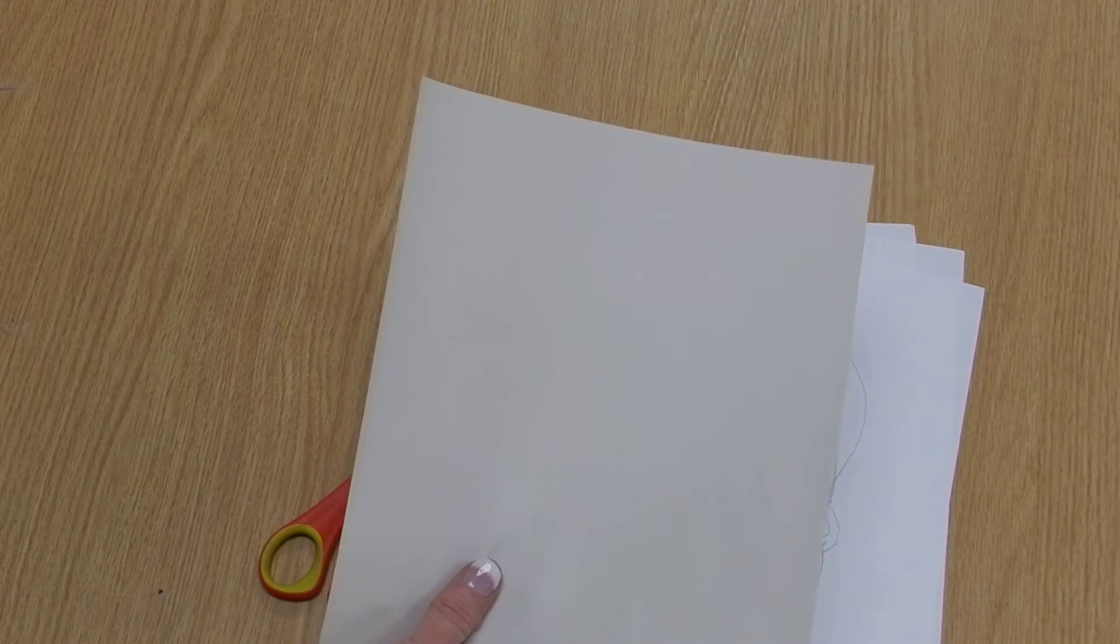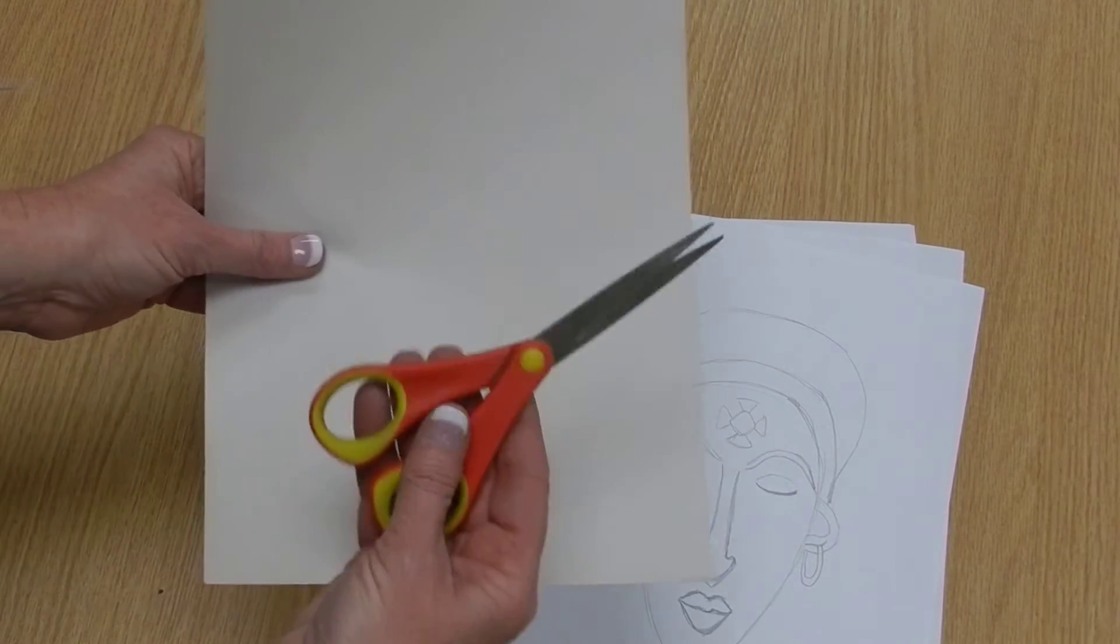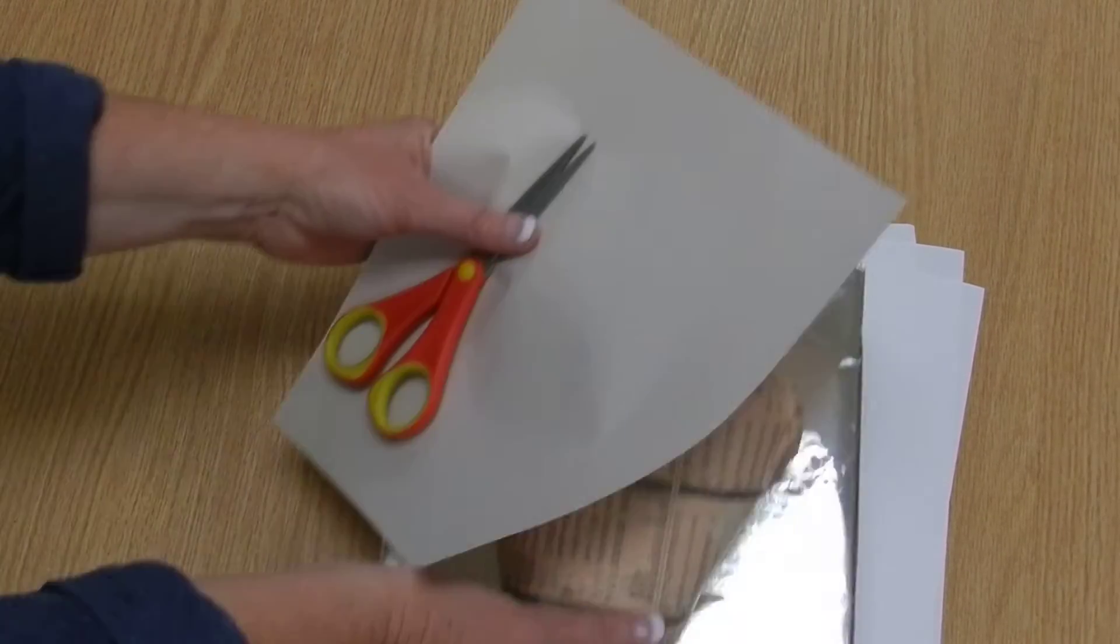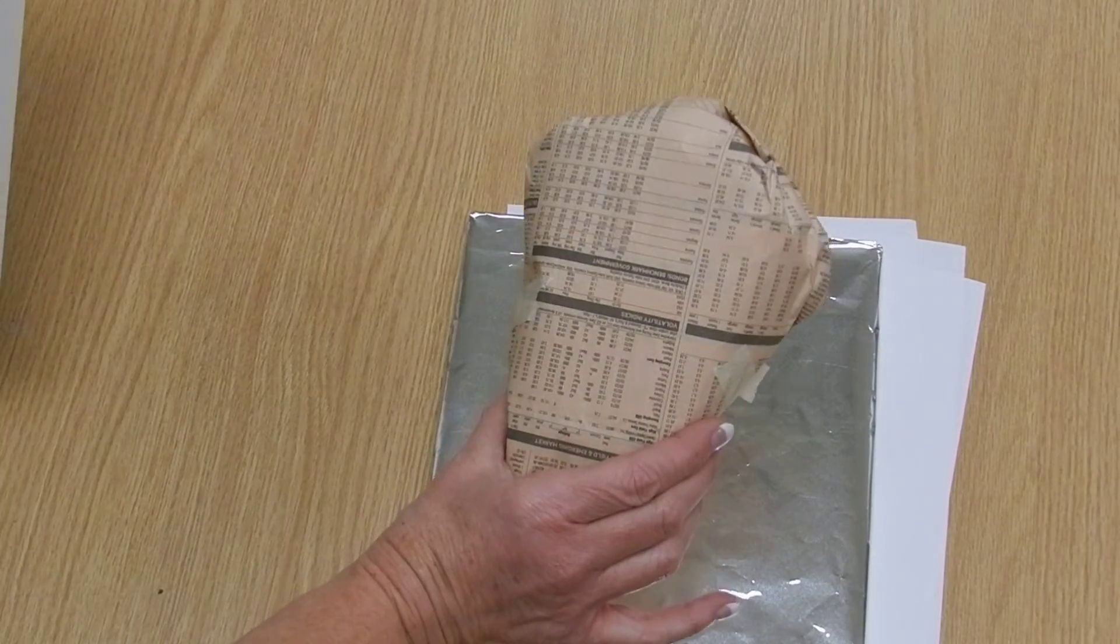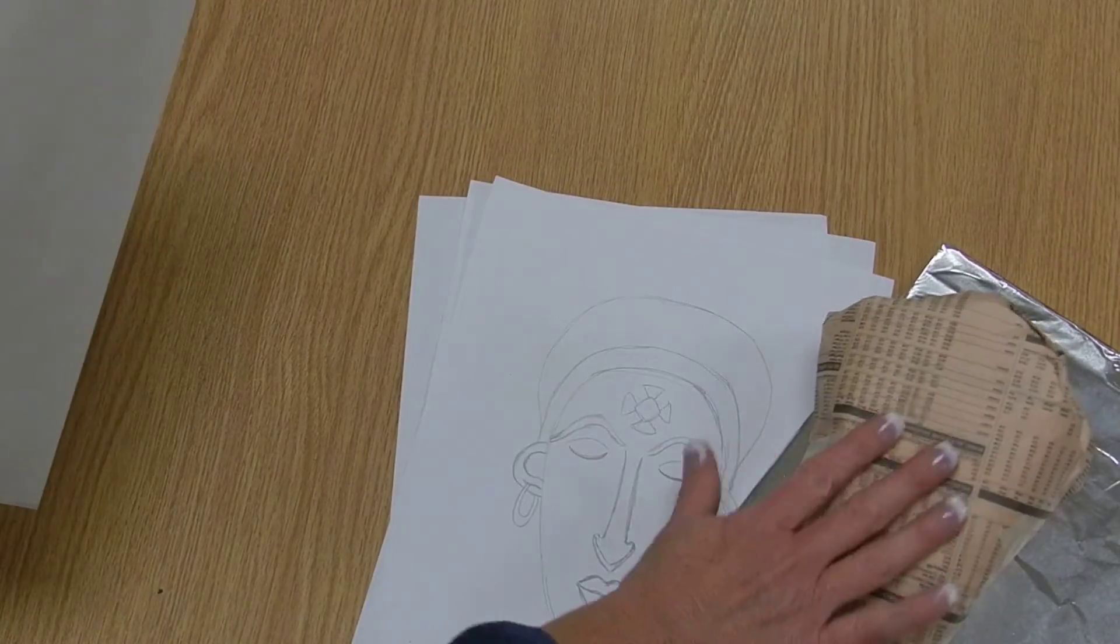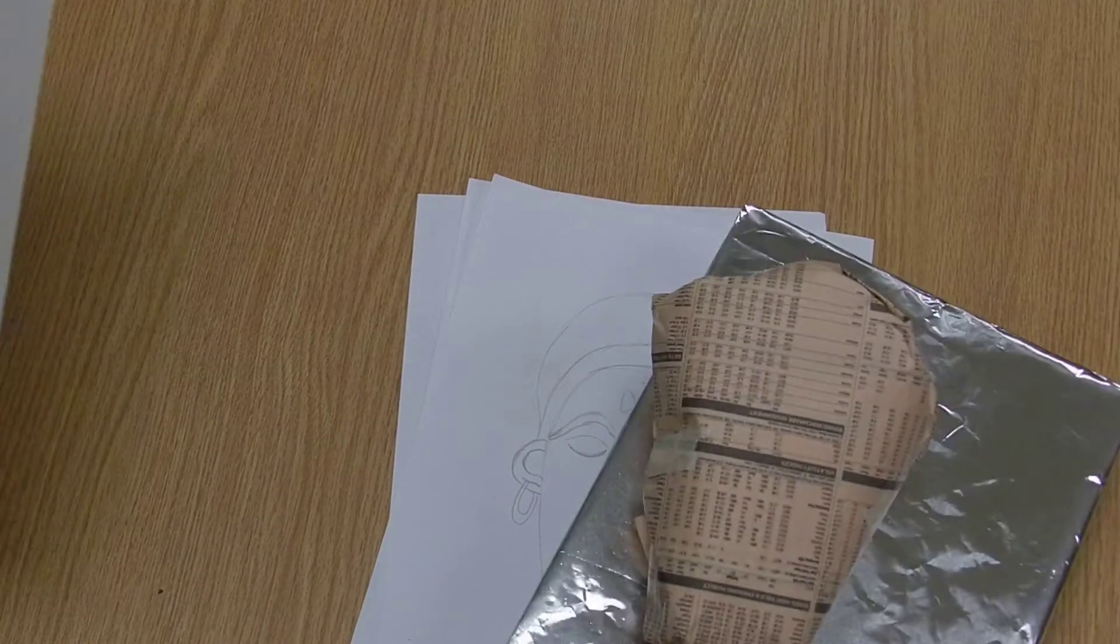So now I have to take a piece of 8x10 newsprint paper, and for this section you'll need the newsprint paper, a pair of scissors, and your armature. And you'll want to keep your armature pretty handy so that you can make sure you're sizing your mask correctly.